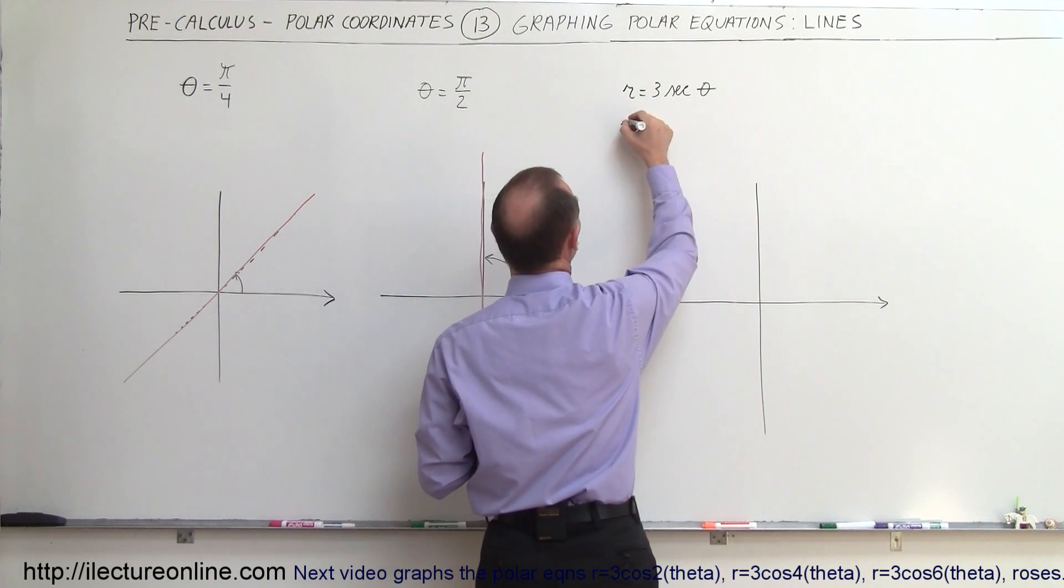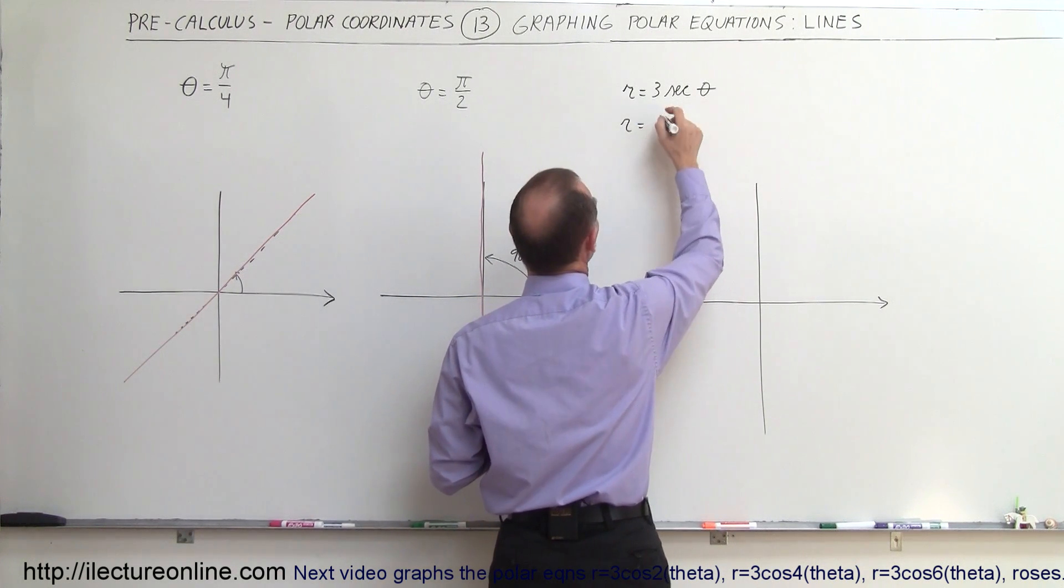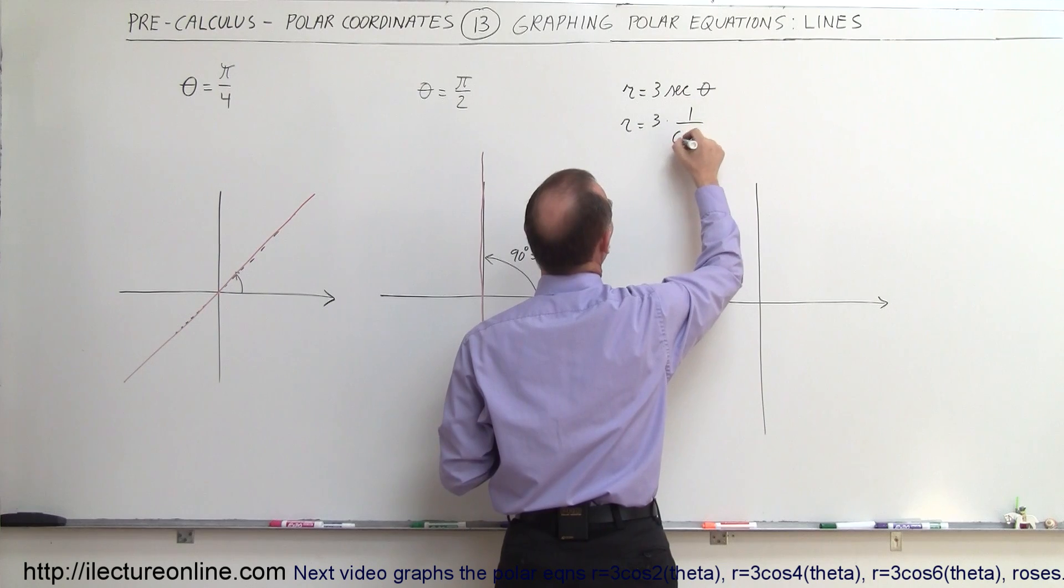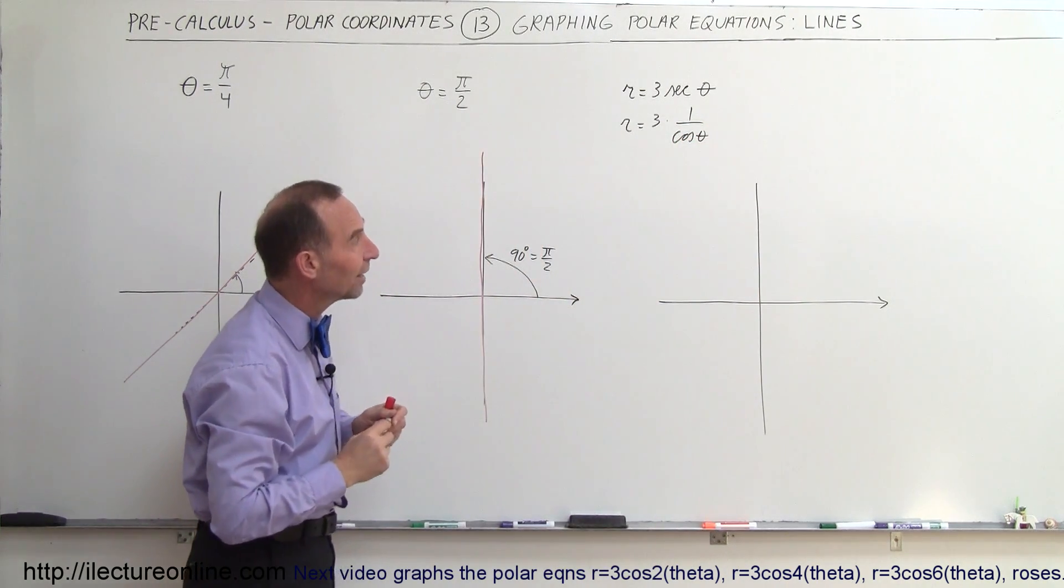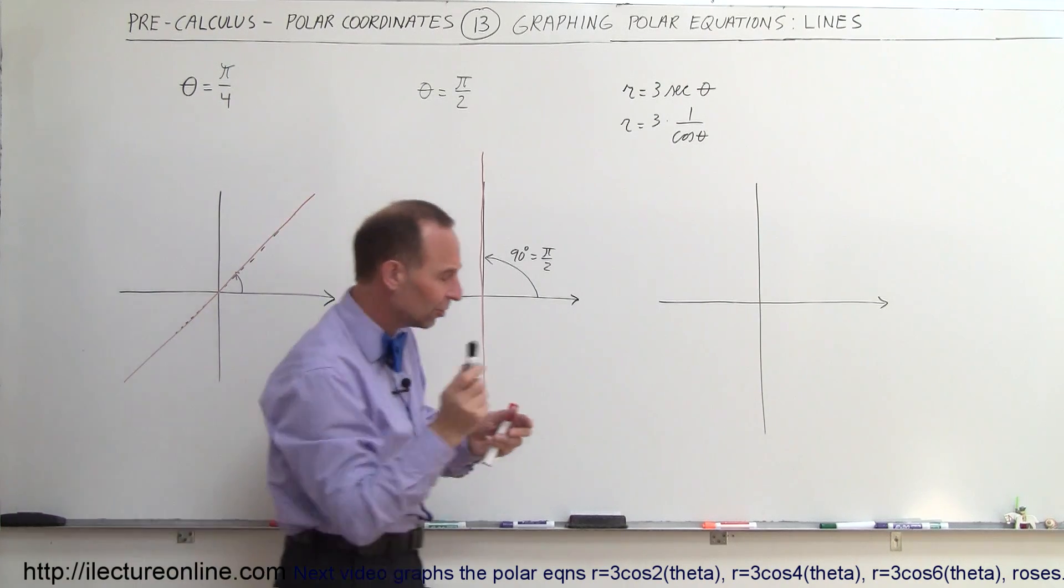If we change this equation to r equals 3 times 1 over the cosine of theta, because by definition, the secant of theta is 1 over the cosine of theta. And if we then plug in some values, you'll see what we get.